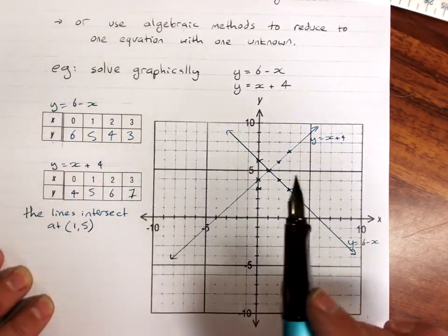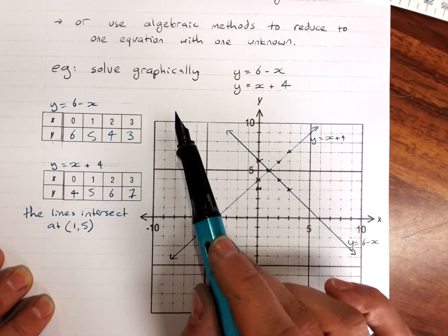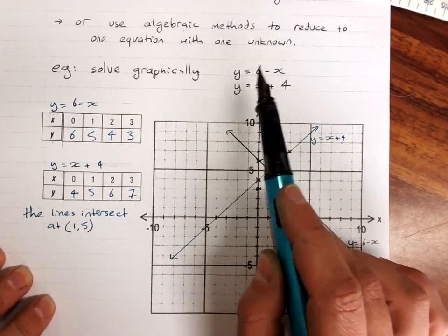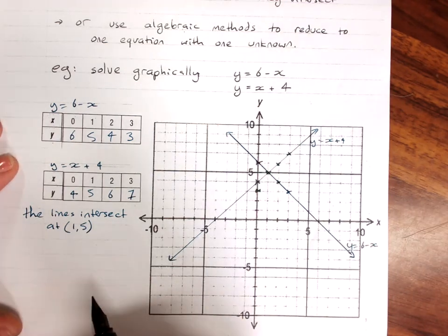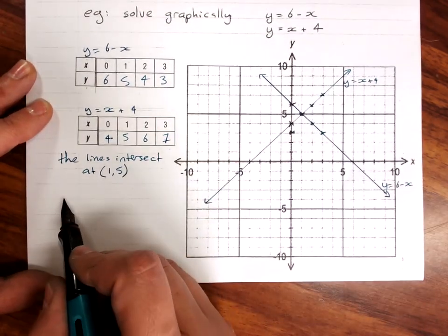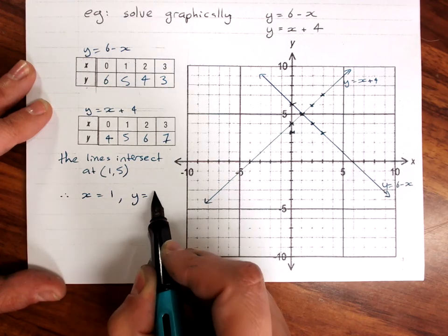Now, if this had been given as a word question, we would work out a word answer. It hasn't. I've just given you the equations. You can give the solution as, therefore, x equals 1, y equals 5.